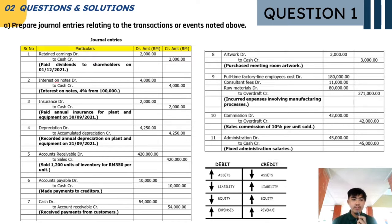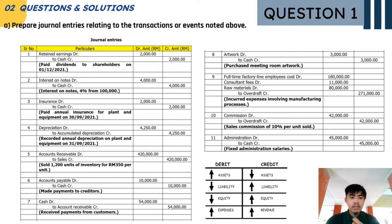In the general journal entry, retained earnings is debited and cash is credited. This is because retained earnings are revenue and since it is decreasing, it will be debited. Since cash is an asset and it is decreasing, it is credited. Next, interest on notes is debited and the cash account is credited, as the interest on notes is 4% from 100,000 ringgit.